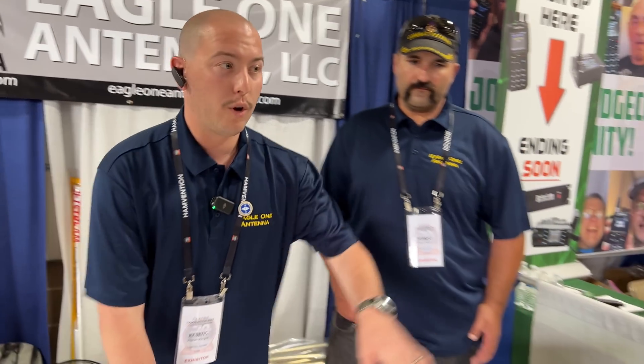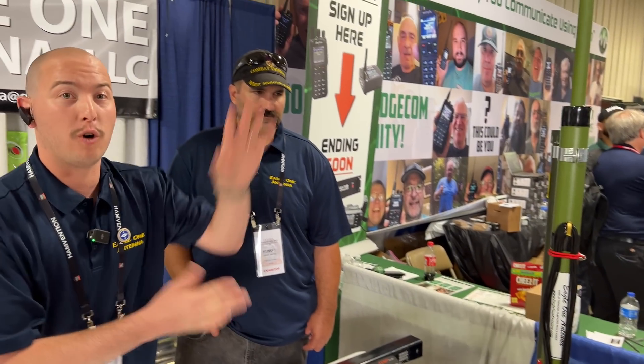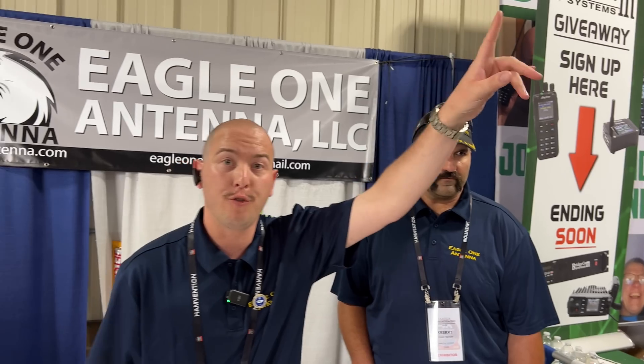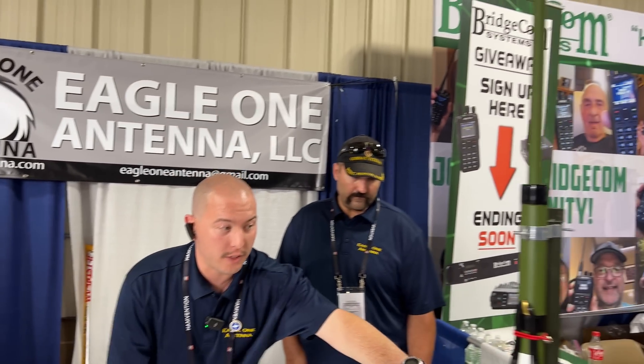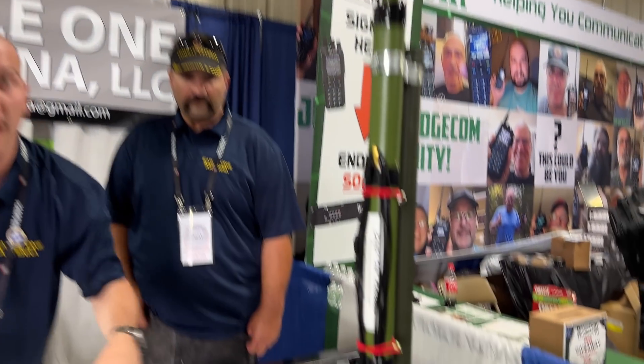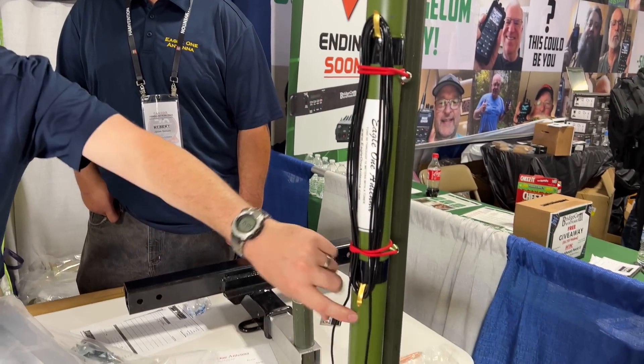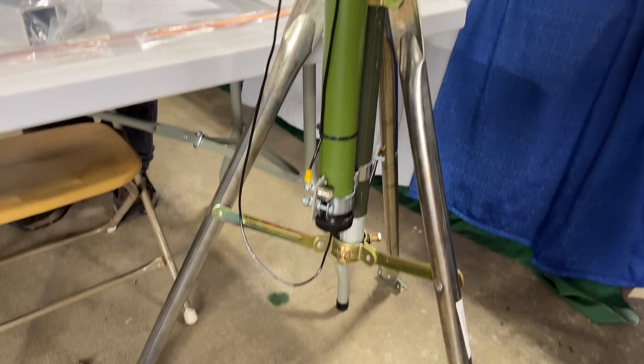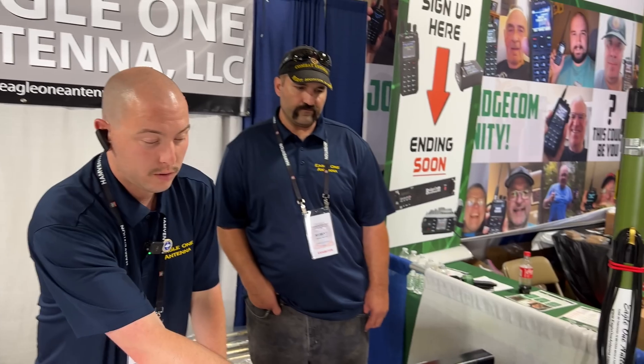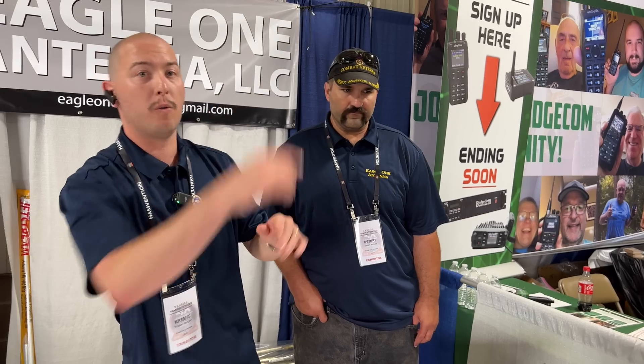Well the Eagle One antenna is a 10 to 80 meter vertical EFHW and what you actually saw here is in this particular situation I don't have enough ceiling to extend it to the full height. At full height this antenna is 32 feet tall. It holds this wire here which is the antenna wire that feeds up through the center of the antenna. And it goes all the way down. And when it collapses down to 48 inches which makes it very portable we give you these two little clips here that lets you store your antenna wire.